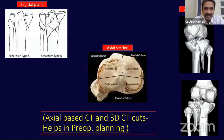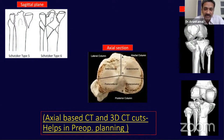Our understanding in recent years has improved from what was originally thought — a sagittal plane fracture — to a more three-dimensional fracture involving anteromedial and posteromedial fragments. This led to better understanding, and proper 3D CT cuts help in pre-operative planning.